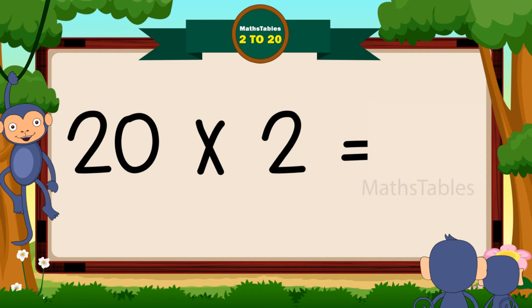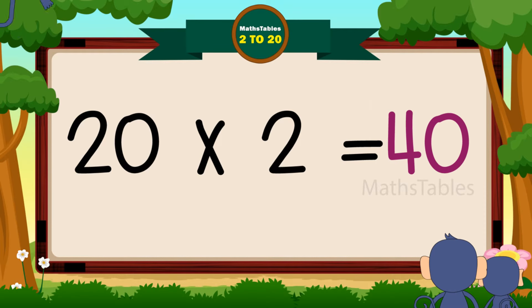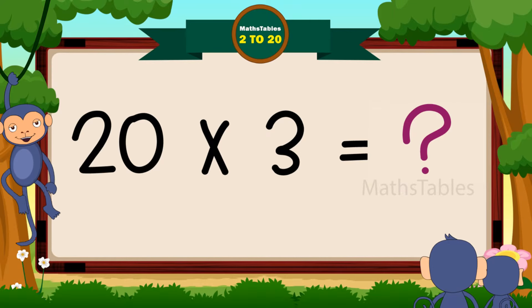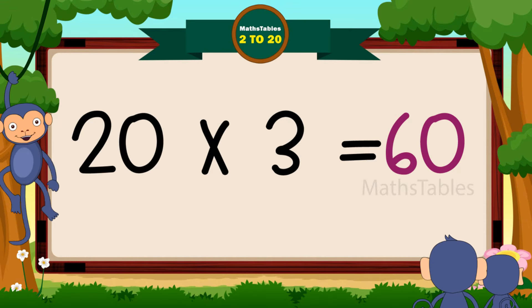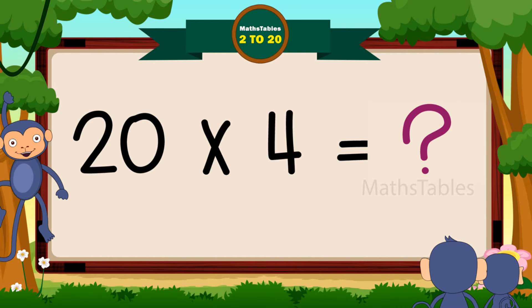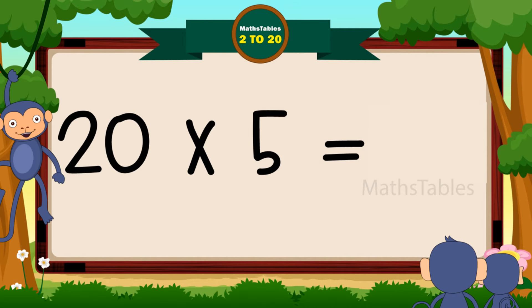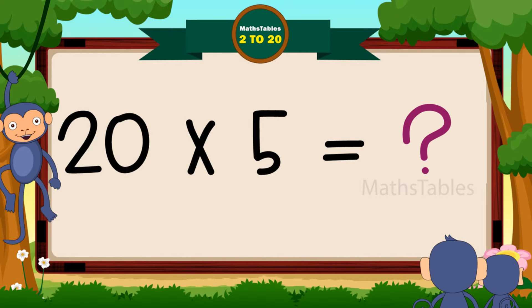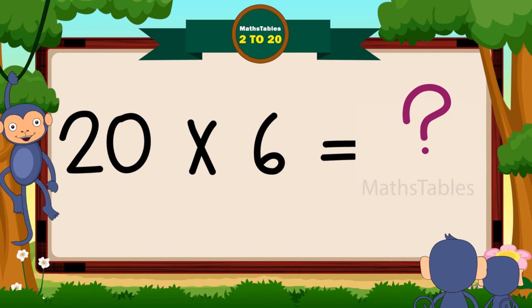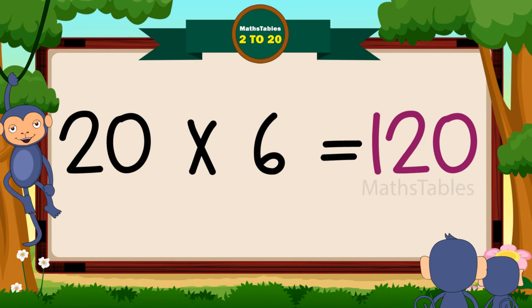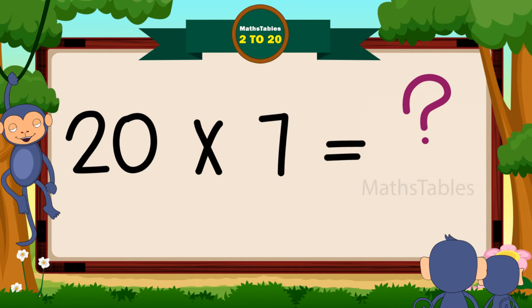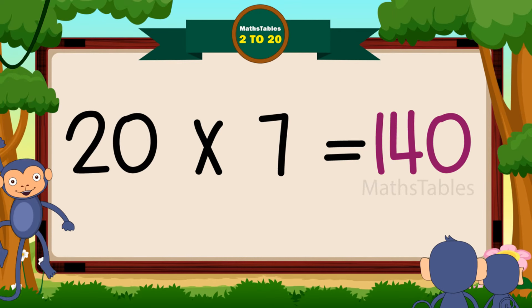2 2's are 40. 2 3's are 60, 2 4's are 80, 2 4's are 80. 2 5's are 100. 2 6's are 120.